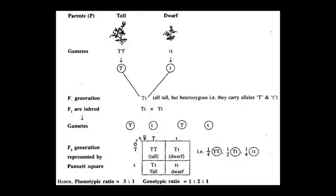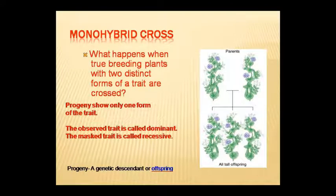To clarify: Law of Segregation is based on monohybrid cross; the third law (Independent Assortment) is on dihybrid cross. Segregation means when gametes are formed, genes that were together separate into different gametes — they are not dependent on each other. When true-breeding plants with two distinct forms of a trait are crossed, the progeny shows only one form (the dominant trait), and the hidden trait is recessive.